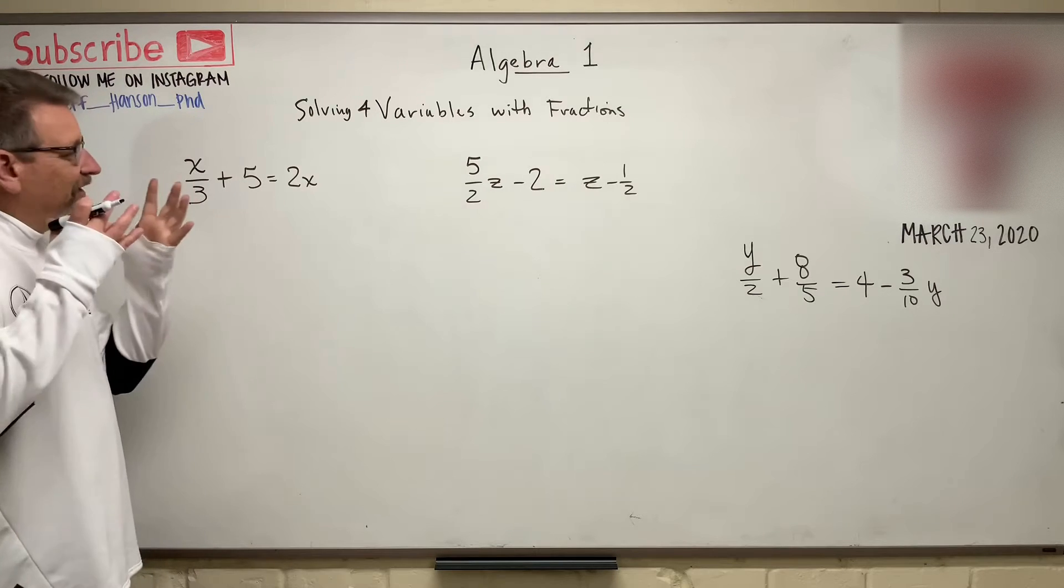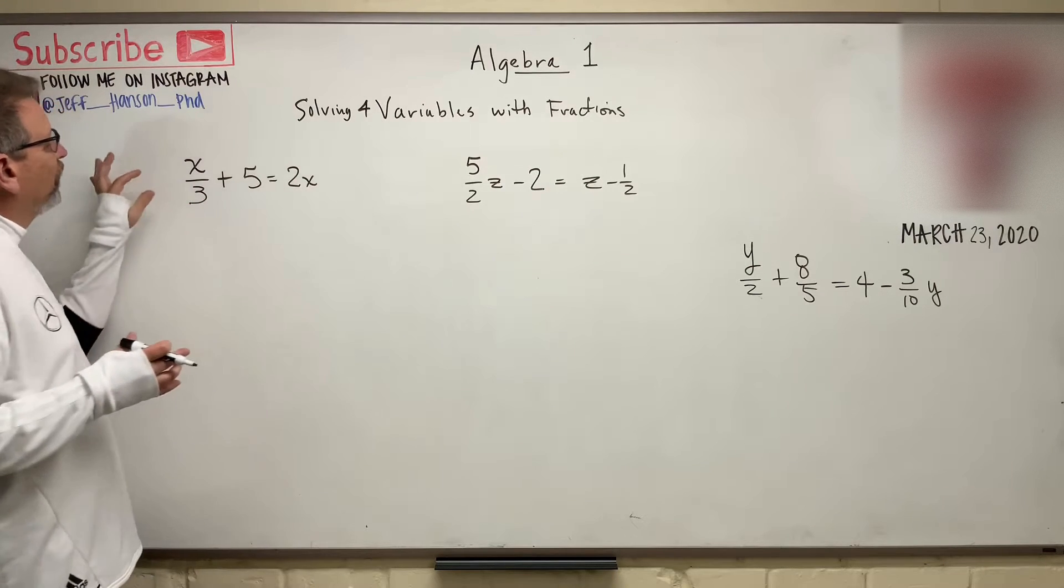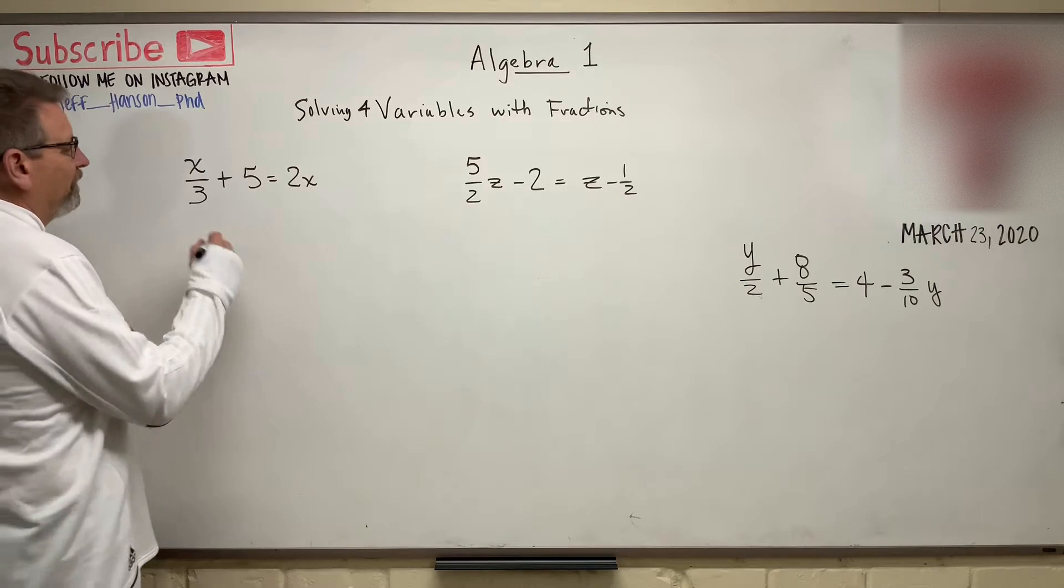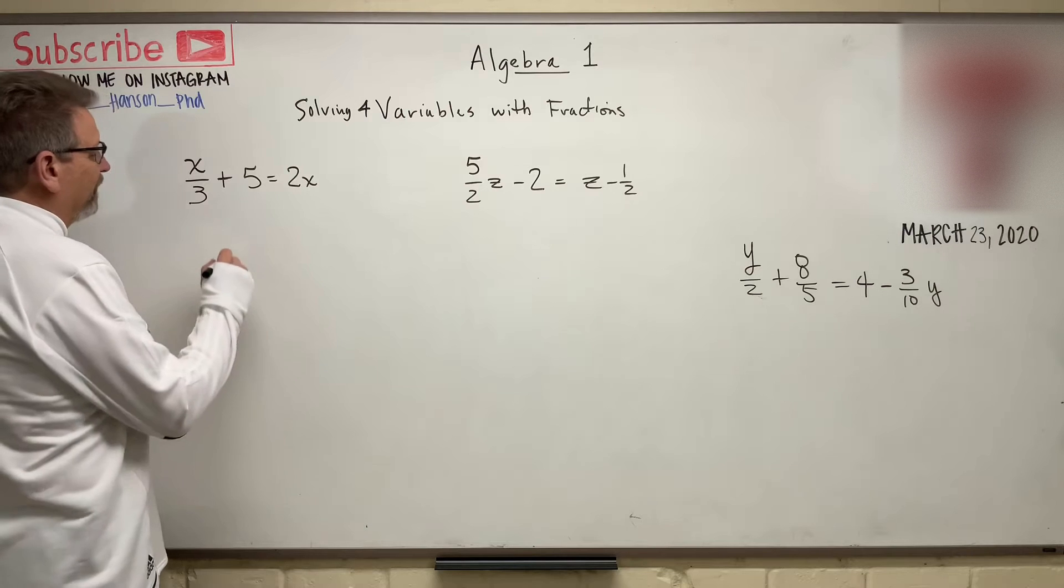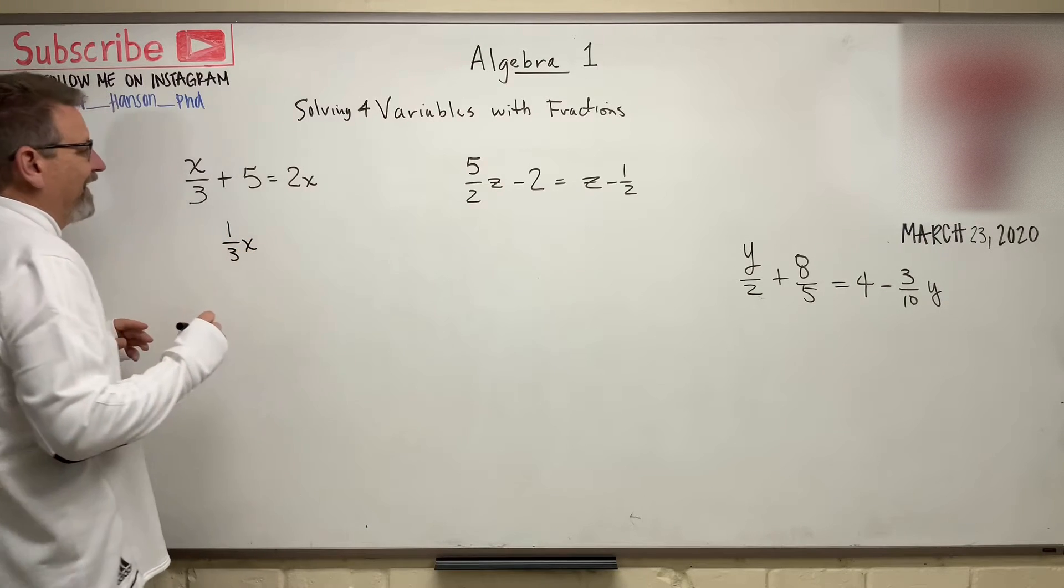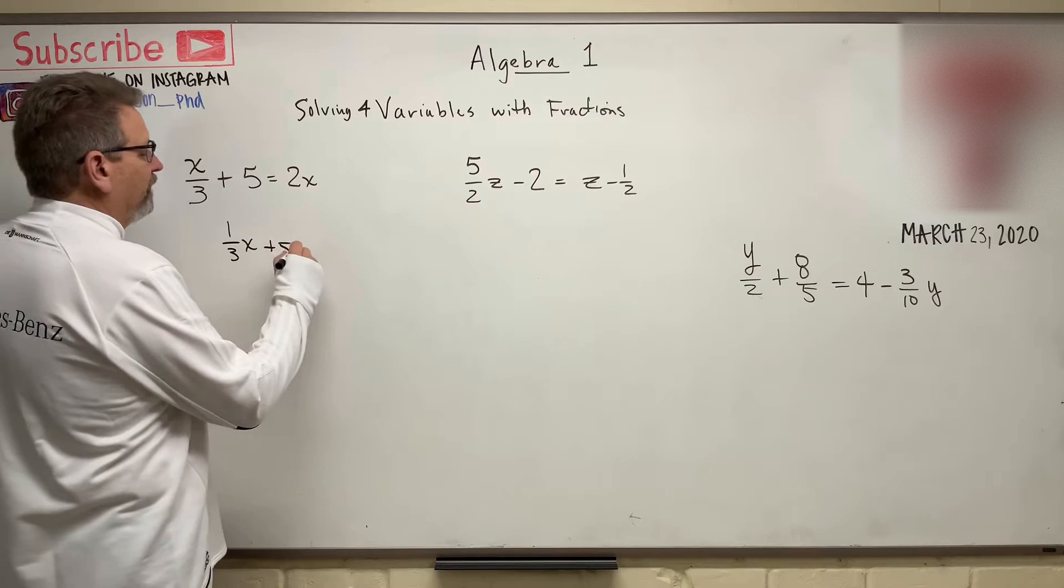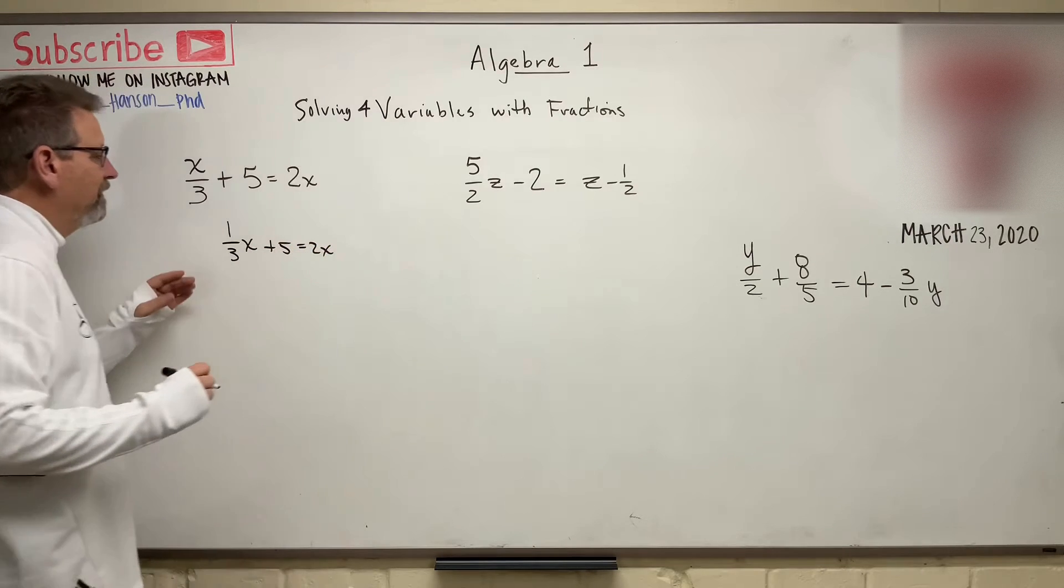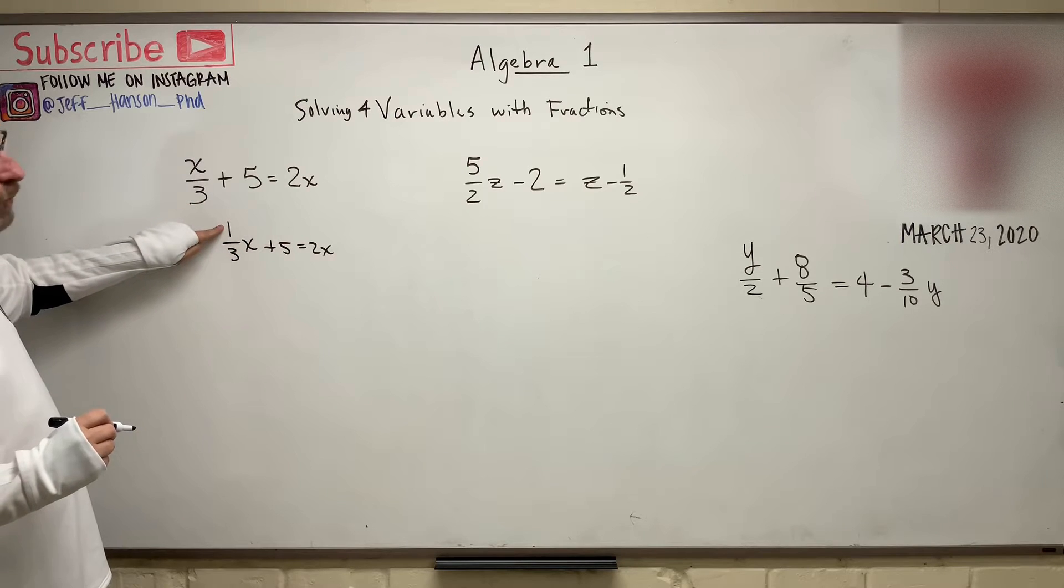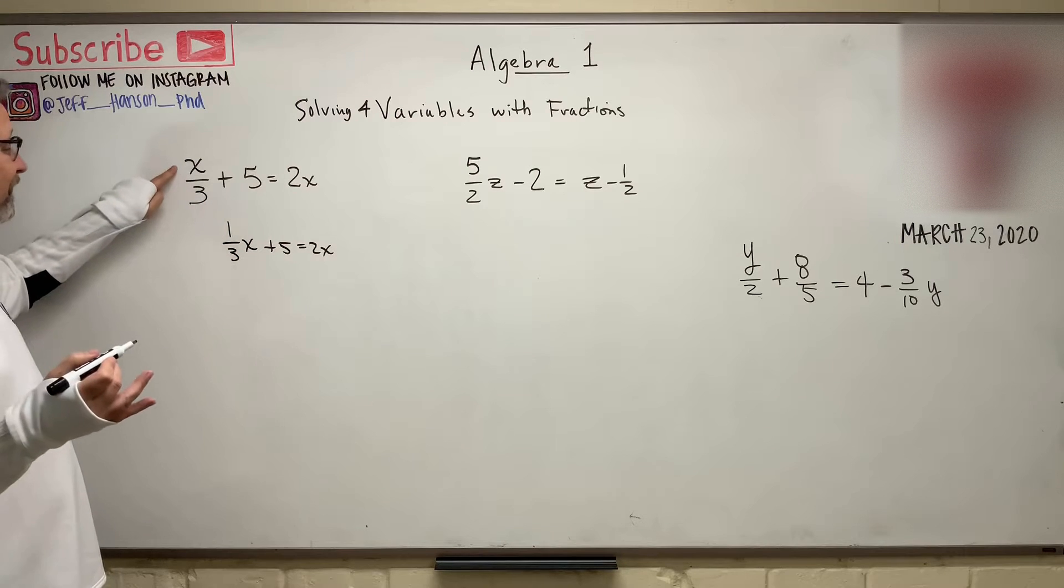Now, there's some things you got to know about fractions. When you see something like x over 3, what does that really mean? Well, really, there's an invisible 1 in front of that x. So you can really think of that as 1 third of x plus 5 equals 2x. That's just another way to write that because if you multiply the x times the 1, it just becomes x.